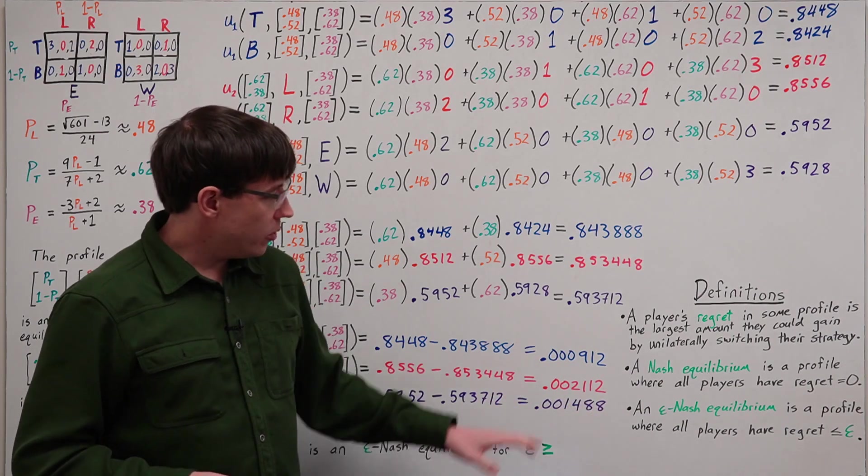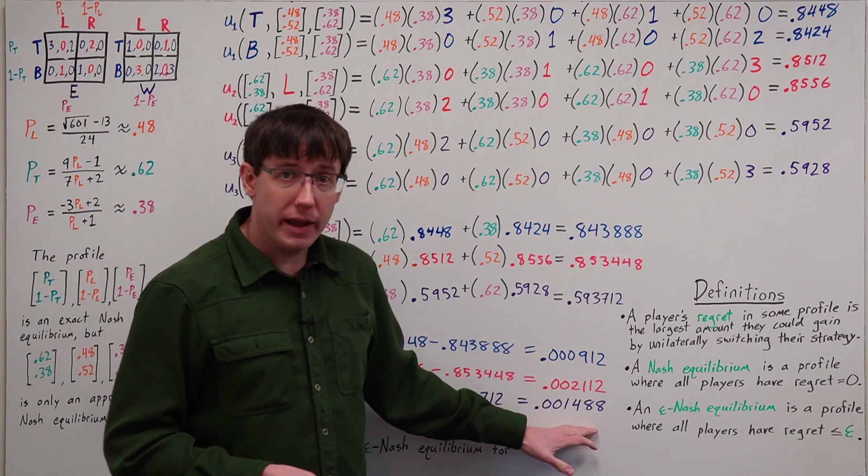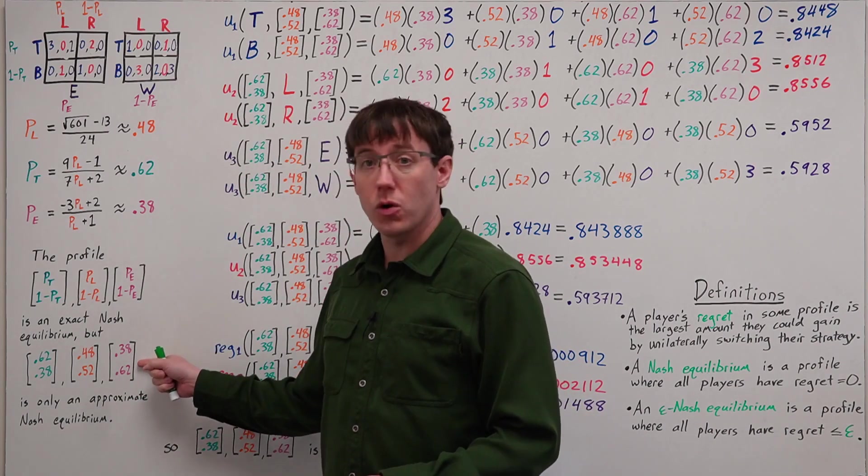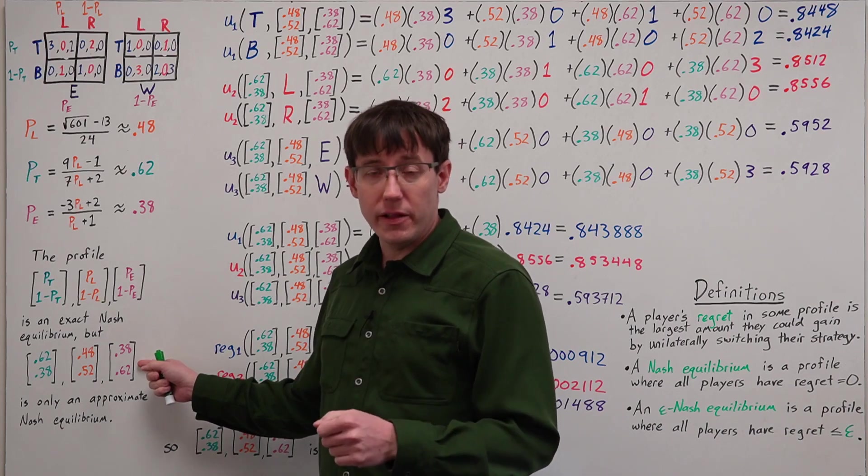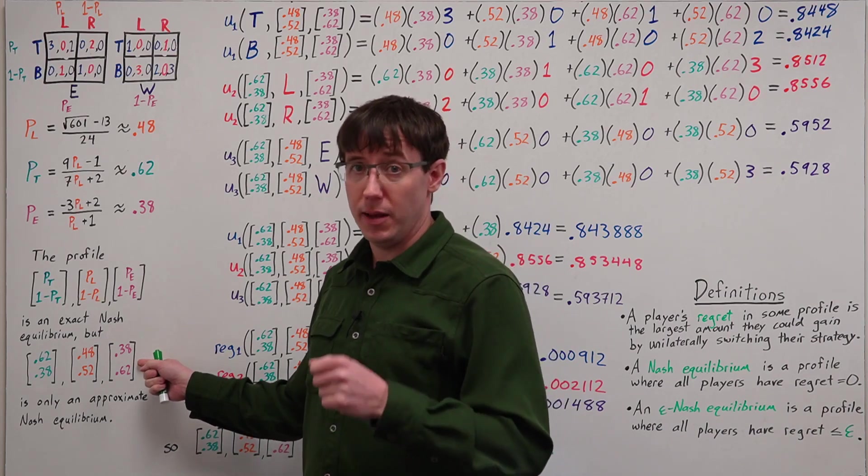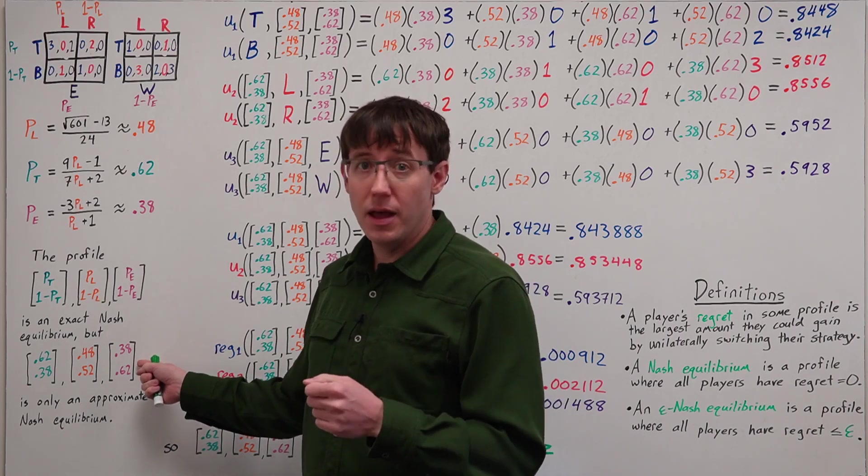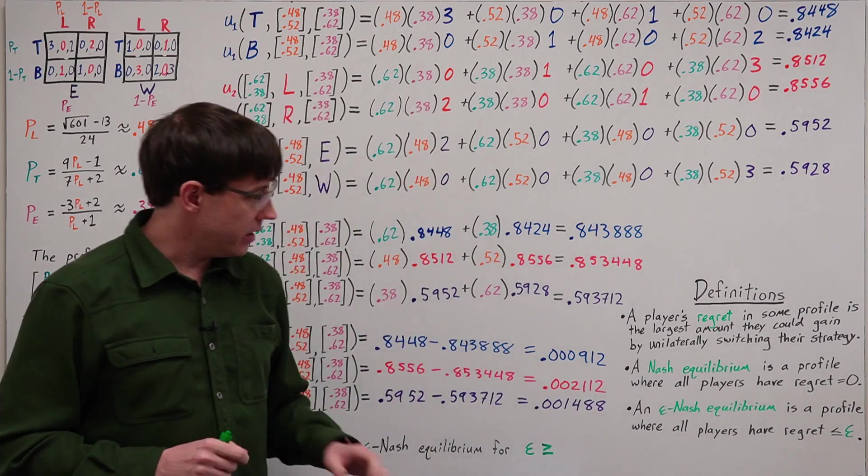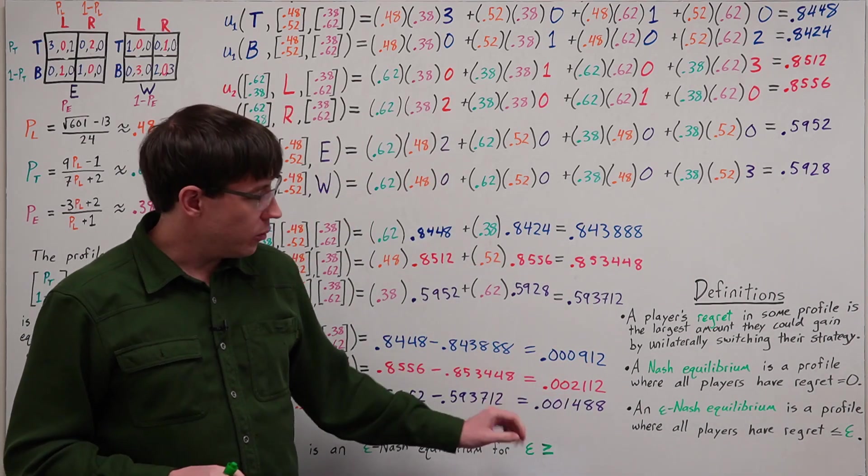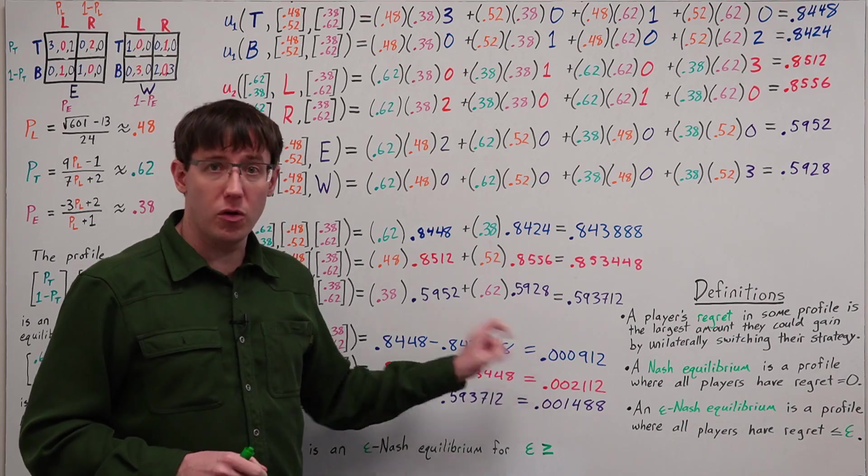And now that we know the regret for each player when they all play according to this profile, we can say that this profile is an epsilon Nash equilibrium as long as epsilon is greater than or equal to the maximum over these regrets.